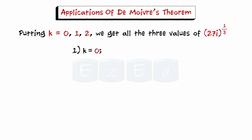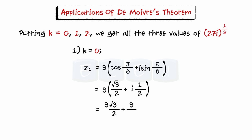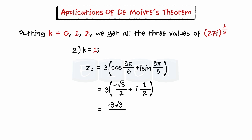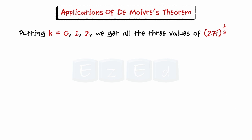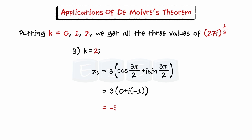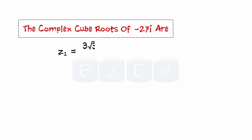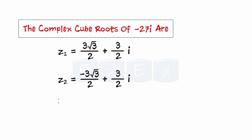Starting with k equals 0, this gives z1 equals 3 times cosine pi by 6 plus i sine pi by 6. Simplifying, we get 3 root 3 over 2 plus 3 by 2 i. Next, taking k equal to 1, we get z2 equals minus 3 root 3 over 2 plus 3 by 2 i. Further, taking k equal to 2, simplification gives z3 equals minus 3i. Hence the complex cube roots are z1 equals 3 root 3 over 2 plus 3 by 2 i, and z3 equals minus 3i.